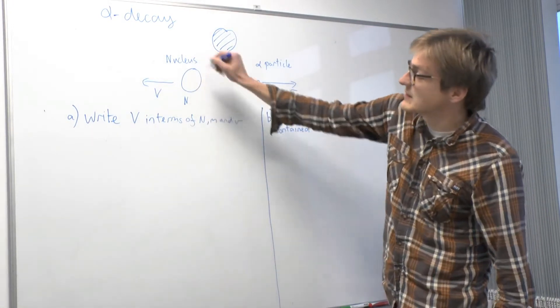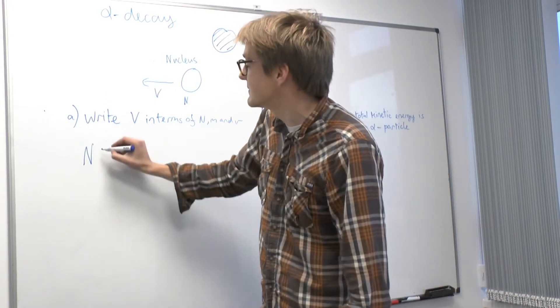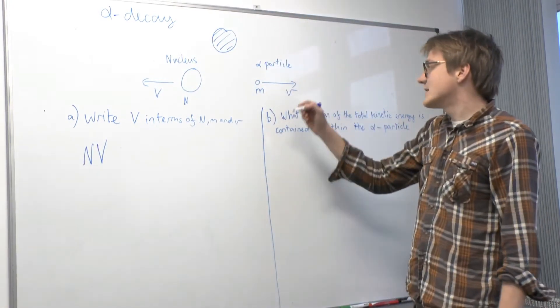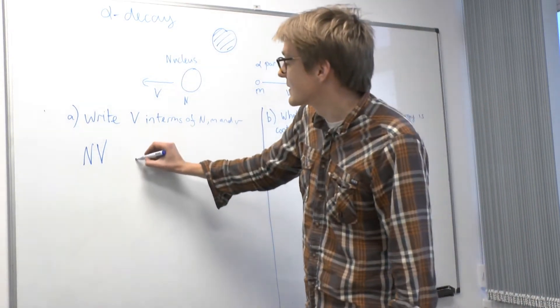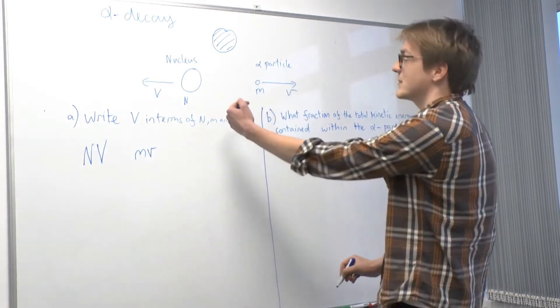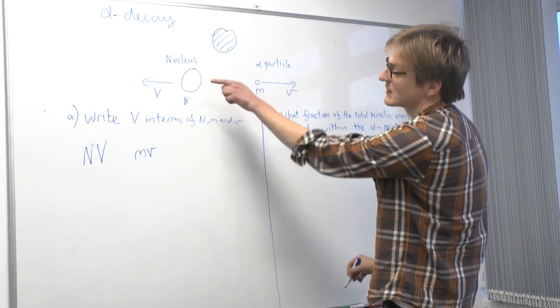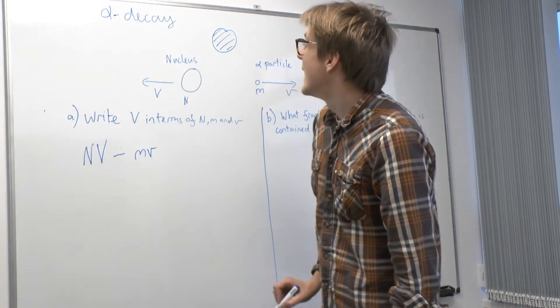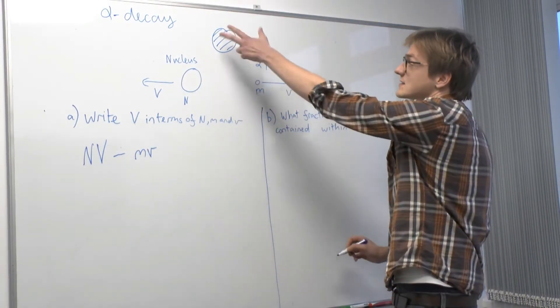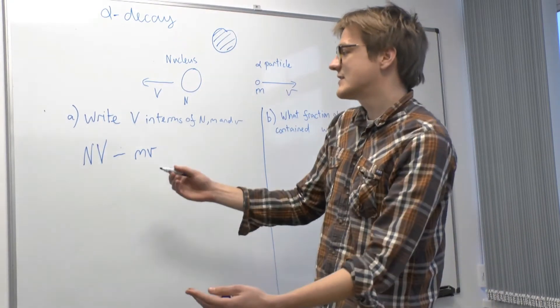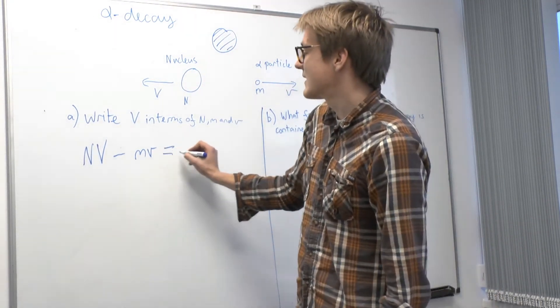Now the momentum of the nucleus is its mass big N times its velocity big V. The momentum of the alpha particle is its mass times its velocity, so little m times little v. But because the alpha particle is moving in the opposite direction to the nucleus, we've got a minus sign here. And initially, the nucleus has zero momentum, so the total momentum of the system is zero. So we set that equal to zero.